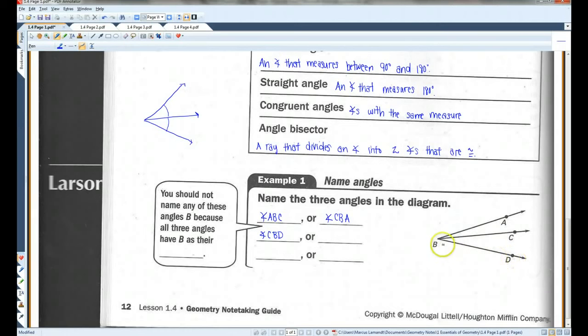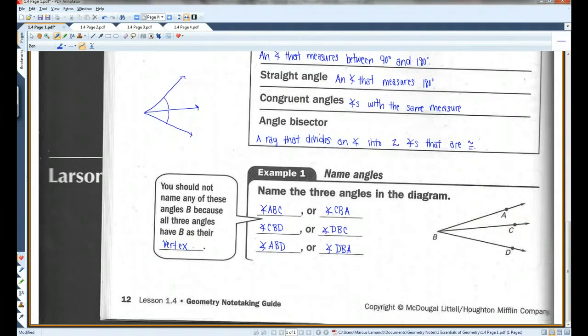CBD could also be called DBC. So there's this angle, this angle. There's also the big angle, angle ABD. Or we could call it angle DBA, as long as B is in the middle, because B is their vertex.